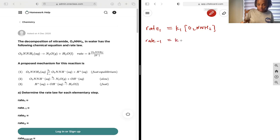Rate negative 1 is going to be equal to k negative 1 O2NNH minus, multiplied by H plus.